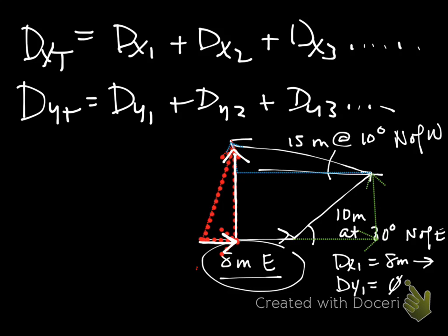So you can have a billion of these things. The resultant is always, always, always going to be connecting the tail of the first vector to the head of the last vector, regardless.